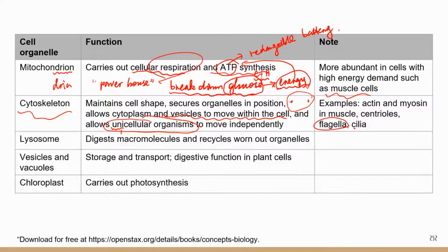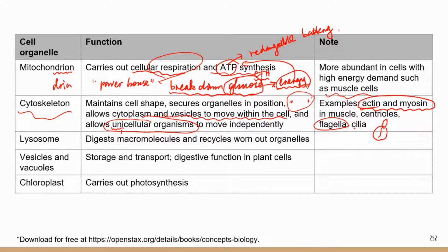Flagella is a structure — kind of like a big tail — that allows unicellular organisms to move. In human bodies, sperm cells use flagella to travel to the fallopian tubes to fertilize the egg. The tail of the sperm is made of cytoskeleton components. Muscle contractions are dependent on two different proteins: actin and myosin. When they interact, this leads to skeletal muscle contraction. Actin and myosin are part of the cytoskeleton.